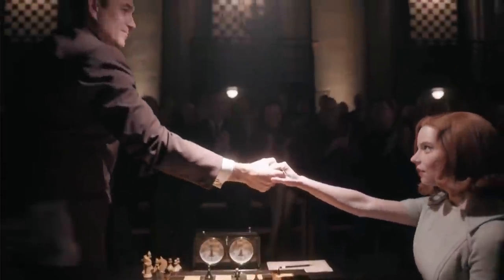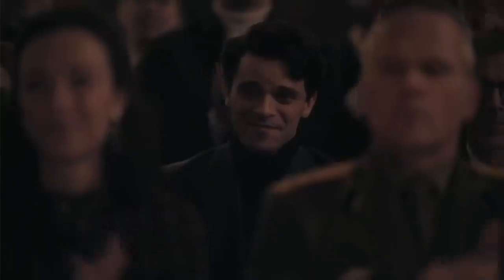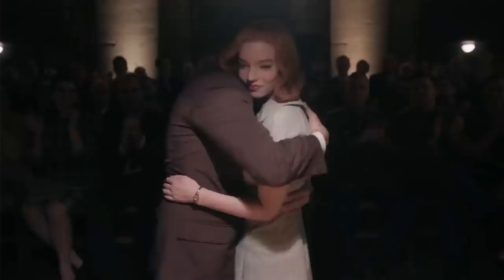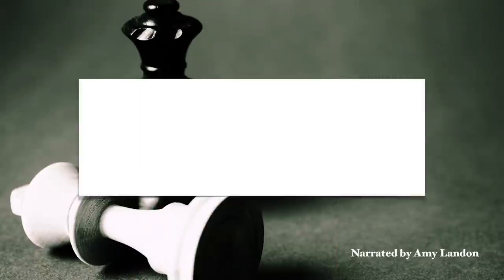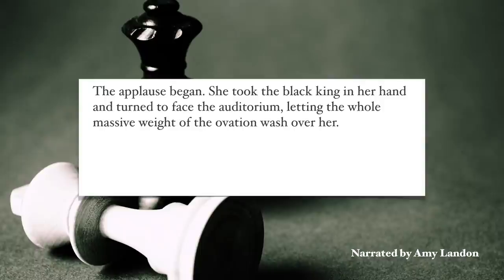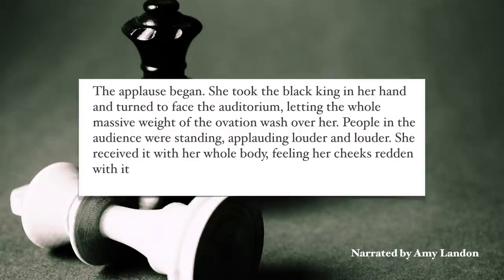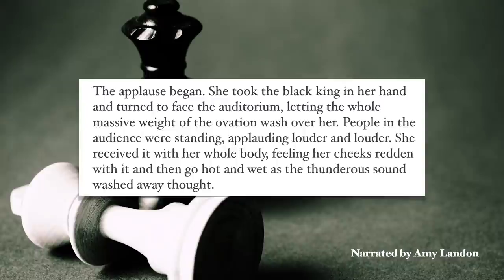The scene's ending resolves the external and internal tension, showing the crowd and the game piece while also conveying Beth's internal reactions. The applause began. She took the Black King in her hand and turned to face the auditorium, letting the whole massive weight of the ovation wash over her. People in the audience were standing, applauding louder and louder. She received it with her whole body, feeling her cheeks redden with it, and then go hot and wet, as the thunderous sound washed away thought.